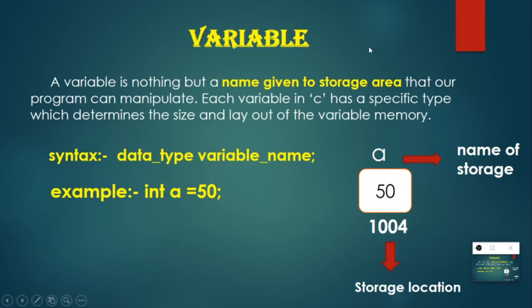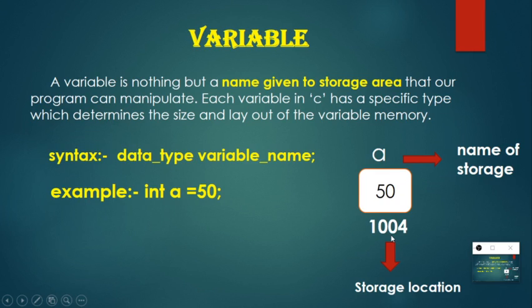Coming to the definition of variable: a variable is nothing but a name given to a storage area that our program can manipulate. Depending on the variable type, the memory size also changes. For example, you can see I have declared a variable syntax: data type, space, variable name. And you can also see the example: int a = 50. On the right side, you can see a picture showing a storage location 1004, and we have given a name for that storage which is 'a'. We cannot assign a value of 50 directly to a storage area, so we use a variable name. The variable acts as a name for the storage, and we can assign a value with the help of a variable. So a = 50 means 50 is assigned to the variable.